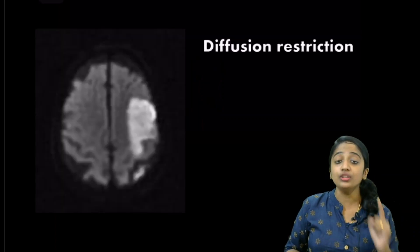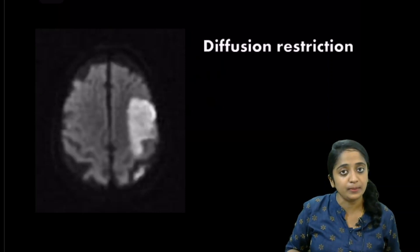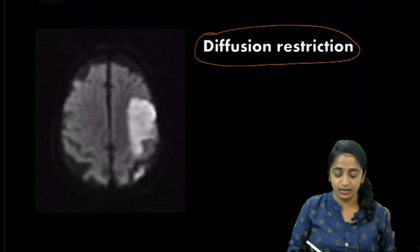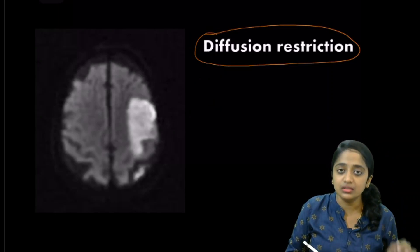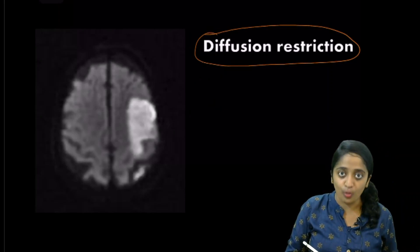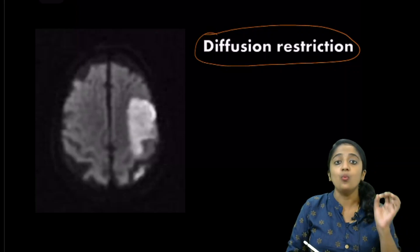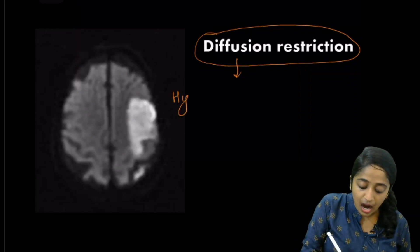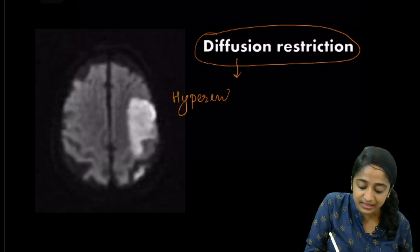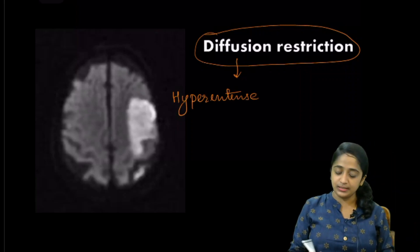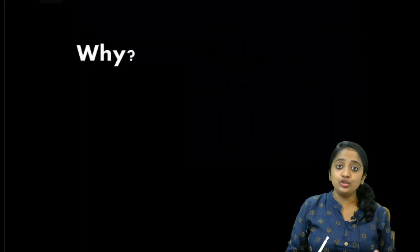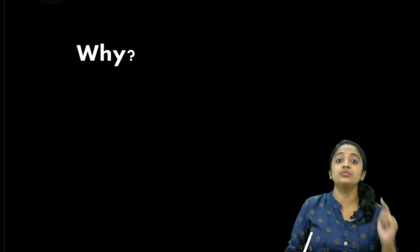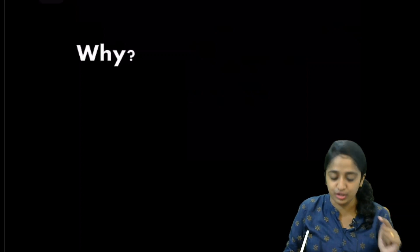What are you going to look for in diffusion-weighted imaging? You are going to look for something known as diffusion restriction. Infarcted tissue — ischemic stroke — will give rise to diffusion restriction, and it is seen as hyperintensity on diffusion-weighted images. The question then arises: why do you get diffusion restriction in MRI in infarcted tissue?